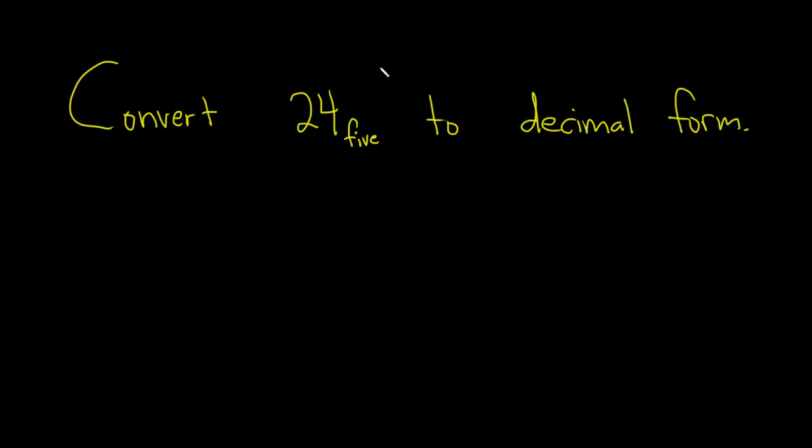In this problem you have to convert this number in base 5 to decimal form. Because it's in base 5, all you have to do is multiply this one by 5 to the 0 and then multiply this one by 5 to the 1 and then just add.